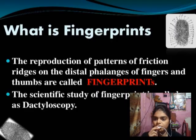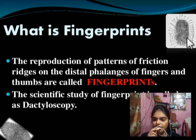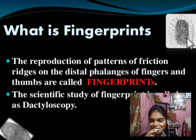We discuss about what fingerprints are. The reproduction of patterns of friction ridges on the distal phalanges of fingers and thumbs are known as fingerprints. It means that patterns present opposite of nails are known as fingerprints.